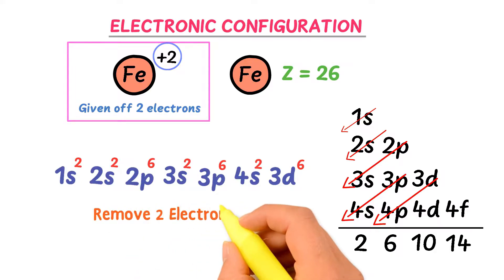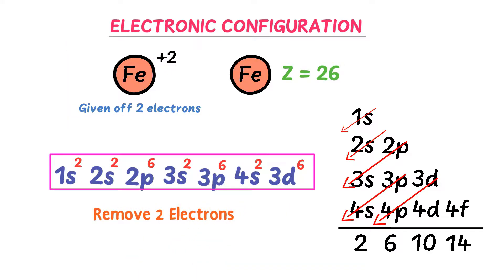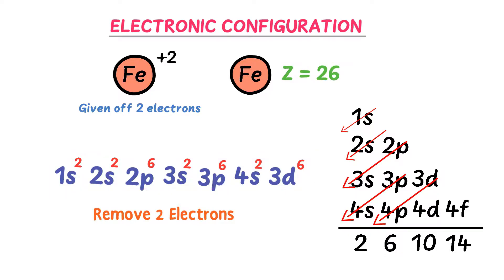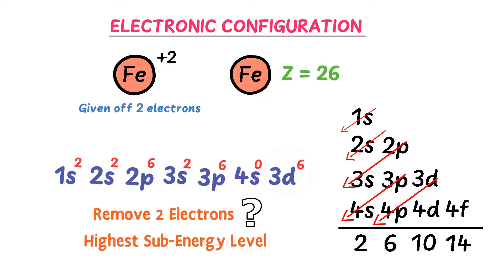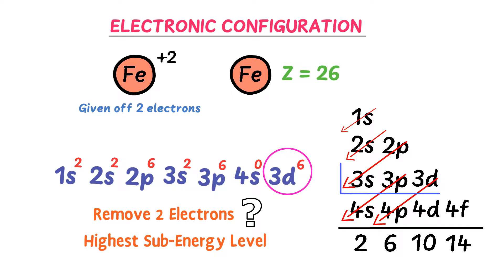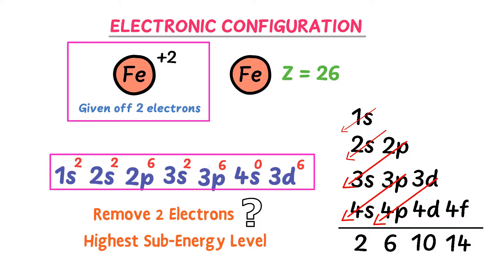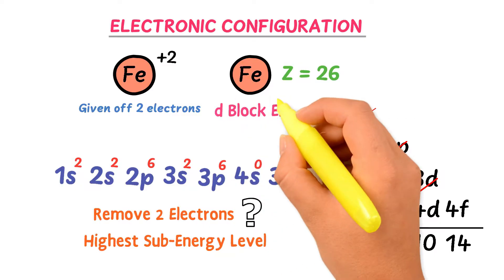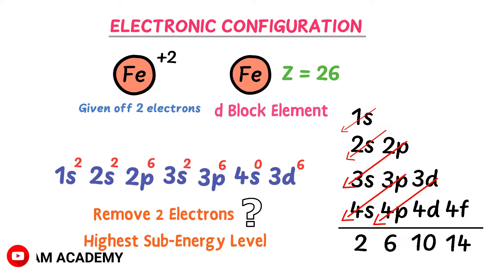But we need the configuration of Fe²⁺, so we must remove 2 electrons from the neutral iron configuration. The question is: which 2 electrons do we remove? We remove 2 electrons from the highest sub-energy level, which is 4s — not 3d — because 4s is the subshell of the N shell (higher) while 3d is the subshell of the M shell. So the configuration of Fe²⁺ is 1s² 2s² 2p⁶ 3s² 3p⁶ 3d⁶. Iron is a d-block element because its valence electrons lie in the d subshell.